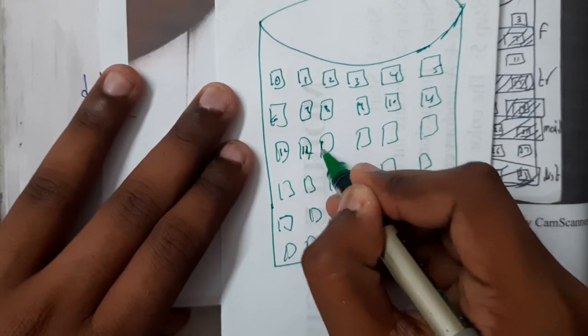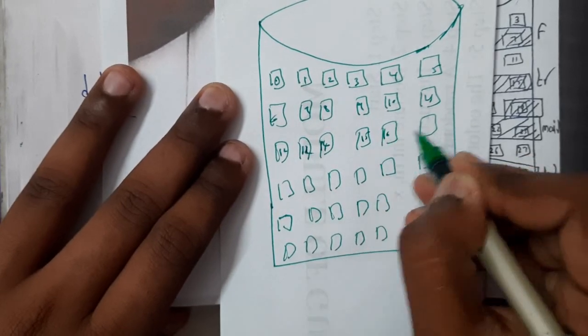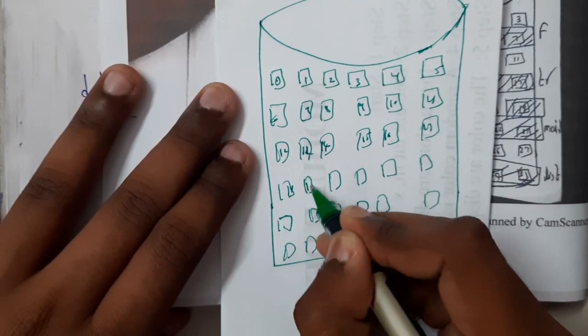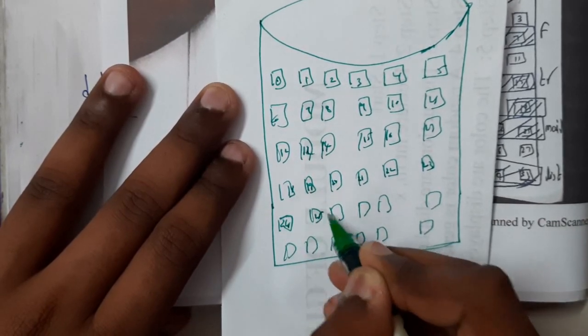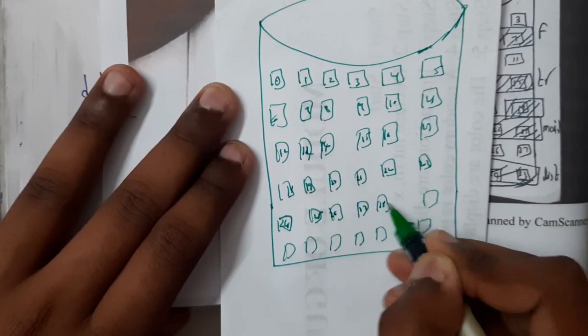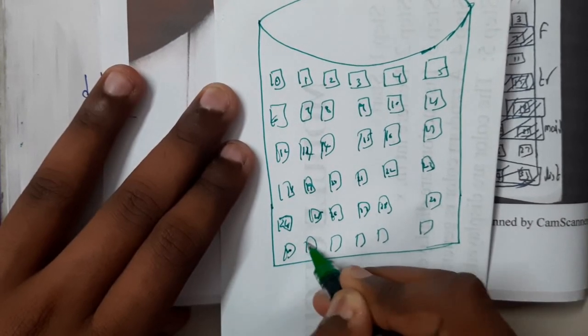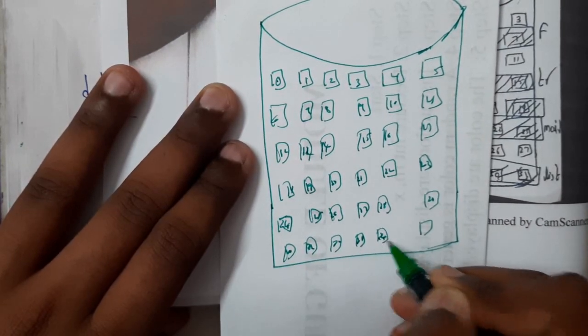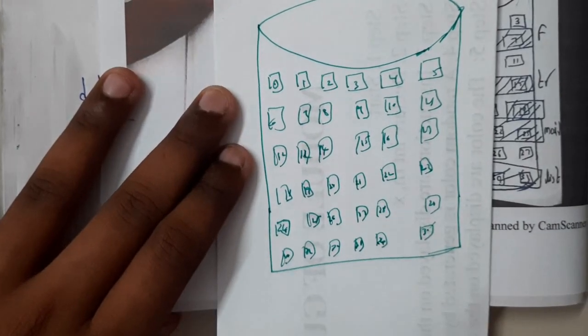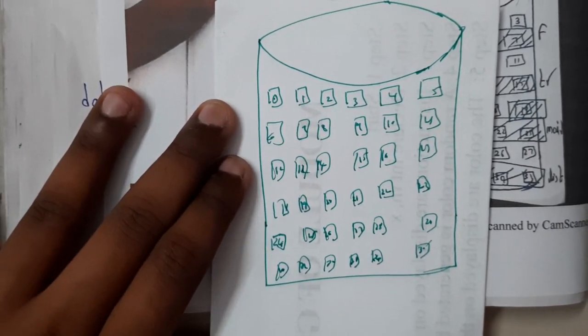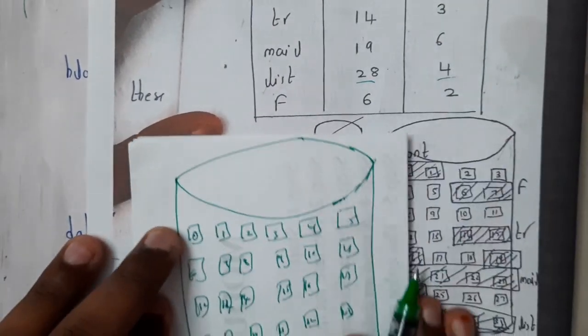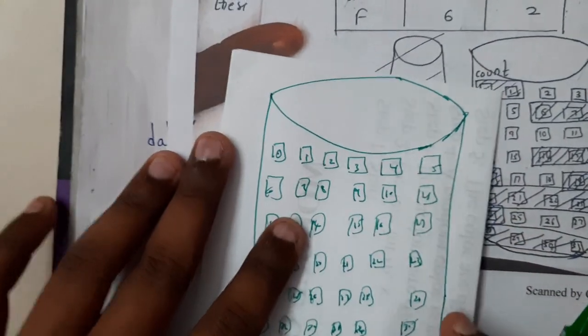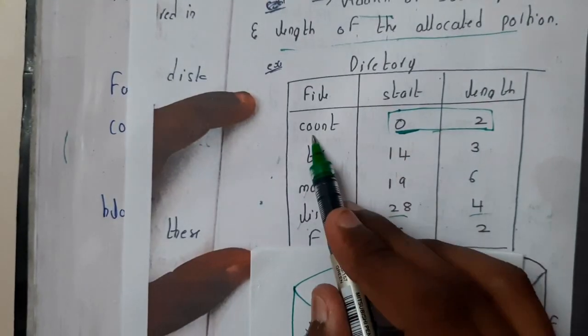So we have 29, 30, 31, 32, 33, 34, 35. If you ask me why I started from 0, it's because we have 'count' which is starting at 0 with length 2. Now let us start. Take the first one - the file name is 'count' and it is starting at 0 with length 2. So fill the 0th block...